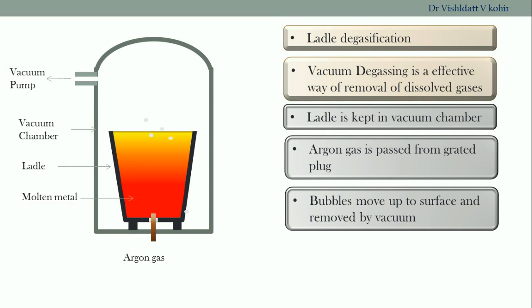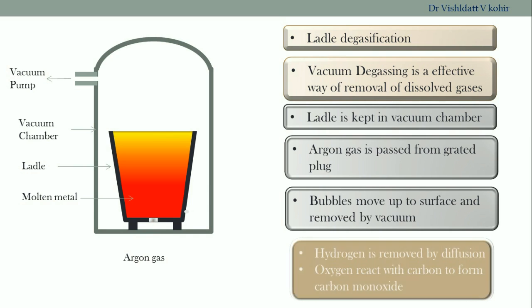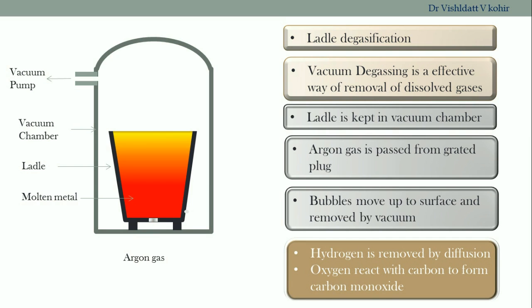The bubbles moving toward the upper surface of the molten metal are being removed by the vacuum present in the chamber. Hydrogen is removed by the diffusion process, whereas oxygen reacts with the carbon present in the steel to form carbon monoxide. As it is light in weight, it also moves upwards in the ladle and is being removed by the vacuum.